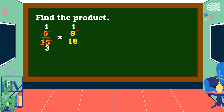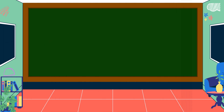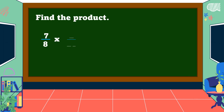Likewise, 9 and 18 have a common factor of 9: 9 divided by 9 is 1, and 18 divided by 9 is 2. Next, multiply both numerators and both denominators: 1 times 1 is 1, and 3 times 2 is 6. Our final answer is 1/6. Remember, if the numerator is 1, it is already in the lowest term — we call it a unit fraction.